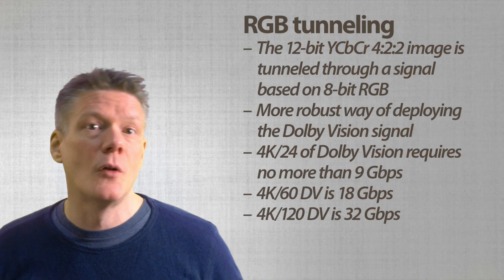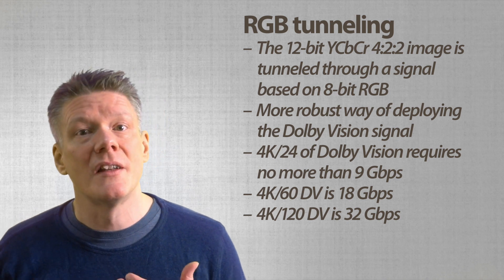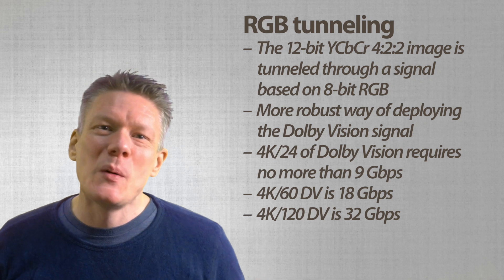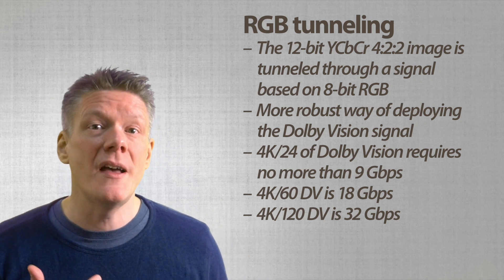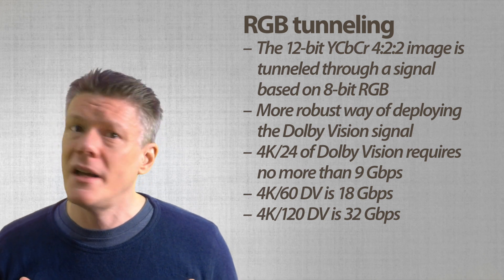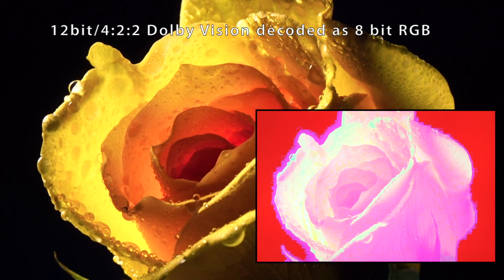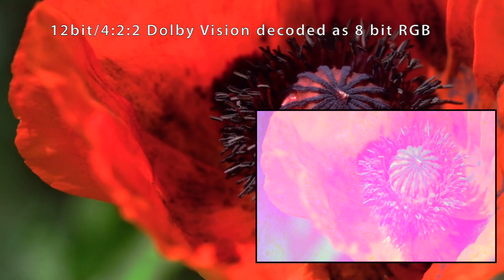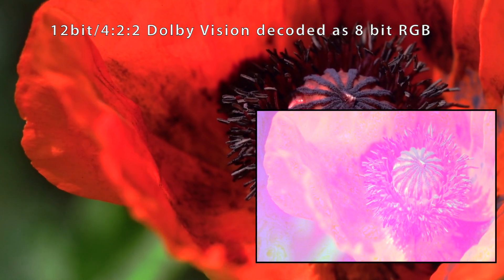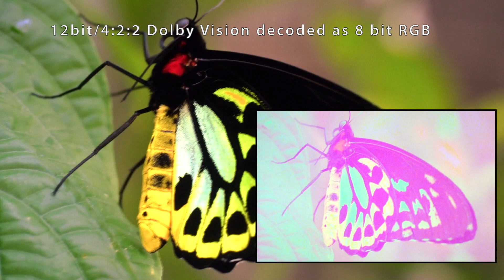The short story here is that Dolby Vision uses 8-bit RGB tunneling to send the 12-bit 4:2:2 signal. Why? Because virtually every device and chipset is capable of handling an 8-bit RGB signal, while support for 12-bit 4:2:2 is not that common at all. The colors look weird because Dolby Vision encodes the color information in a different way. This RGB tunneling means that the Samsung TV receives an RGB signal and handles the image as if it were encoded in RGB.